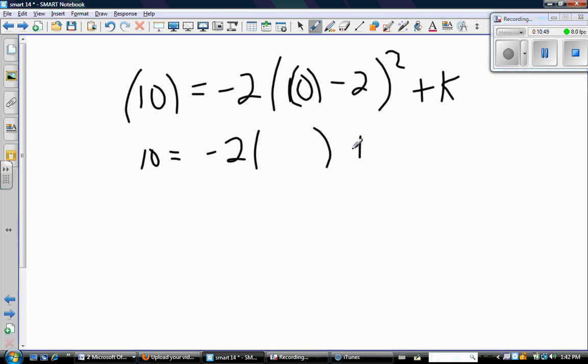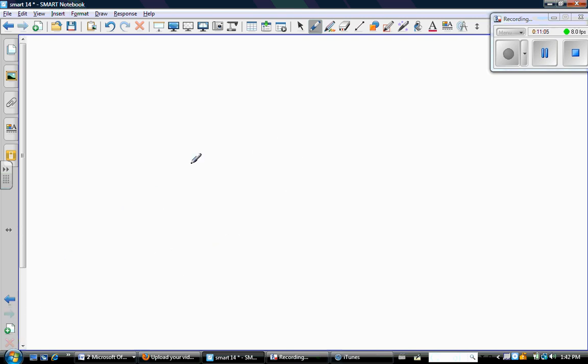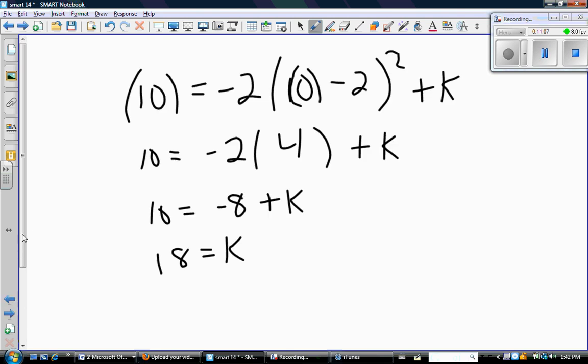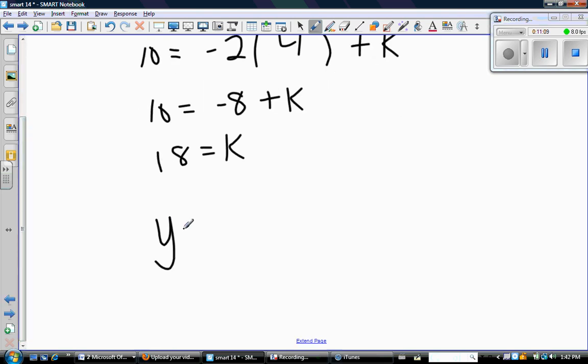So now I just have to do this math and I'll be able to solve for k. So here, 0 minus 2 is -2. -2 squared is positive 4. So -2 times 4 is -8. Add 8 to both sides. And I know the value of k. Okay. So therefore, I know the equation of this quadratic is right here. So my vertex is at (2, 18). And the a value is -2.